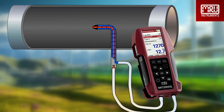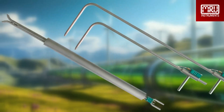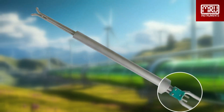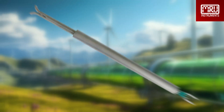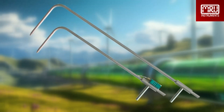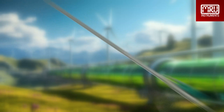Instead of using a simple pitot tube, we have pitot tubes that have ports for both static pressure and dynamic pressure. This can either be an L-type or S-type pitot tube. Our S-type pitot tube always has temperature measurement. The L-type pitot tube is available with and without temperature measurement; however, the one with temperature measurement is the most suitable.